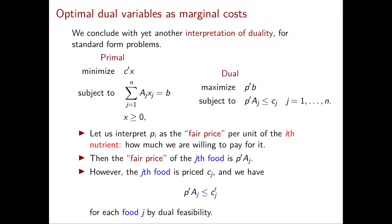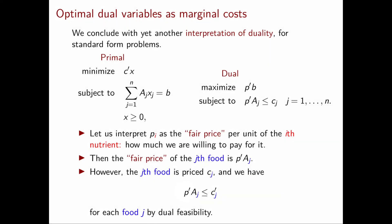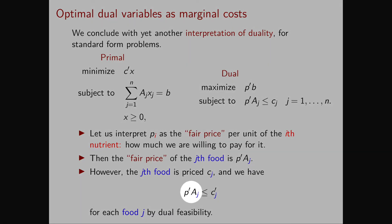From the objective function of the primal problem, we know that the cost of the J-th food is Cj. And from the dual constraints, we obtain that the fair price of the J-th food is less than or equal to its actual price.